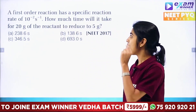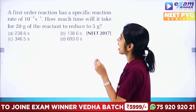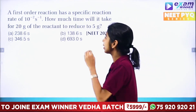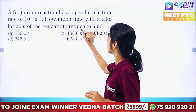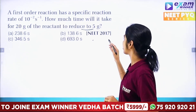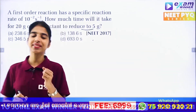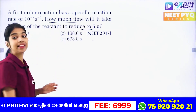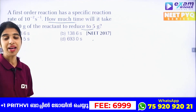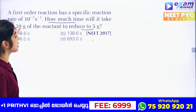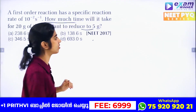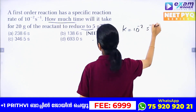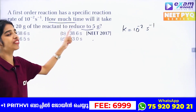Second question: if a first order reaction has a specific reaction rate of 10⁻² s⁻¹, how much time will it take for 20 grams of the reactant to reduce to 5 grams? We are going to talk about how much time, given the specific reaction rate 10⁻² s⁻¹.